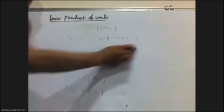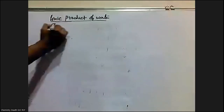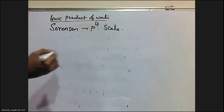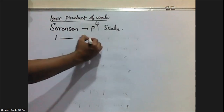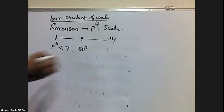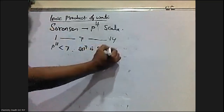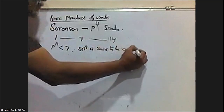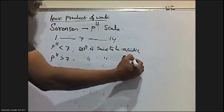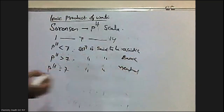Sorensen is the scientist who introduced the pH scale. In the pH scale, if pH is less than 7 the solution is said to be acidic. If pH is greater than 7 the solution is said to be basic. And if pH is equal to 7 the solution is said to be neutral.